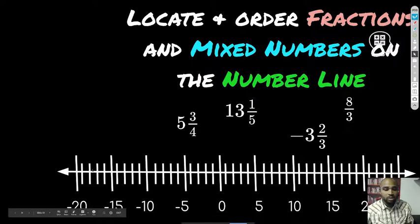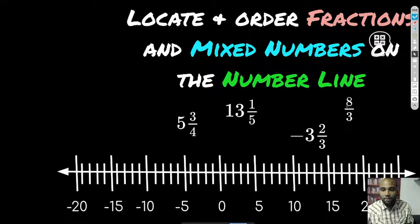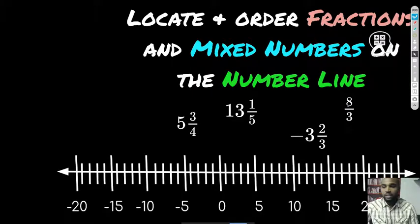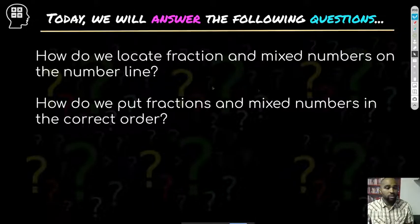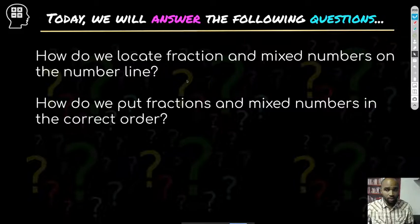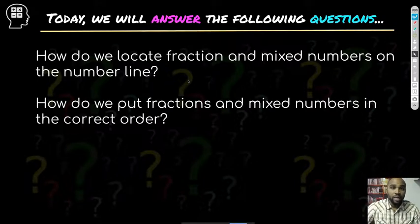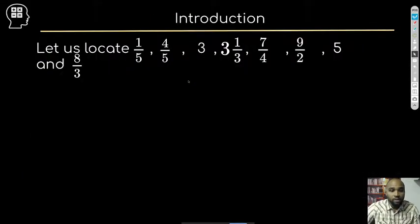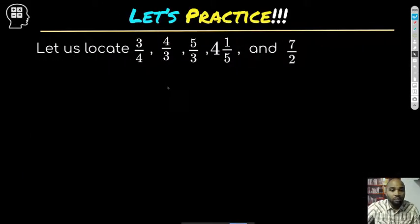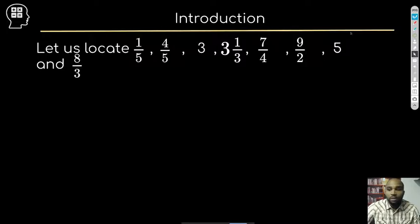You see a number line here, you see some mixed numbers, you see some negative improper fractions, and we're going to deal with all that in today's lesson. Let's look at our questions we want to answer: How do we locate fractions and mixed numbers on a number line? And how do we put fractions and mixed numbers in the correct order? Because the value does matter.